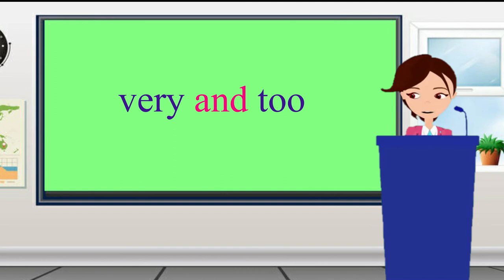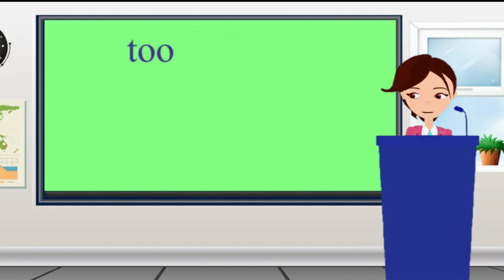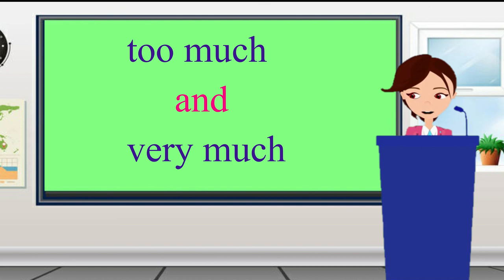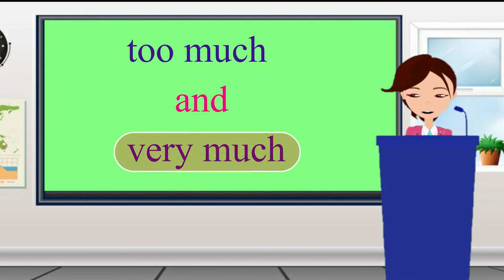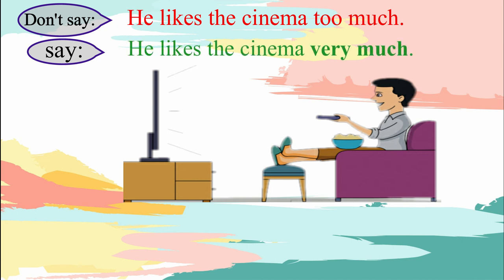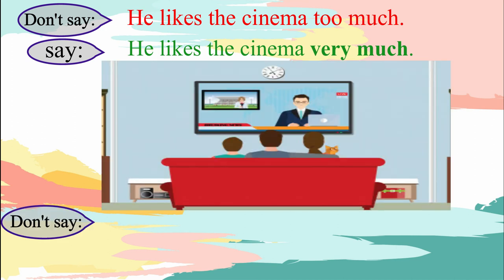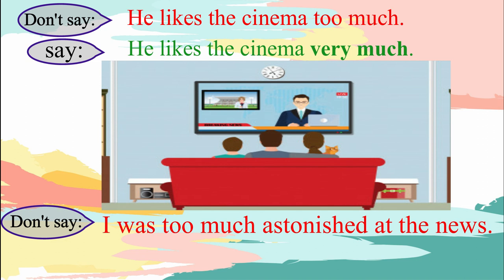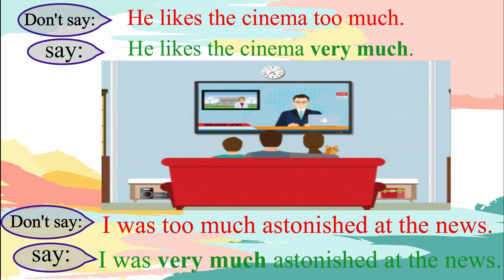In the previous slide we learnt about the usage of adverbs very and too. Now let us understand the difference between too much and very much. Too much denotes an excessive quantity or degree. Very much is used instead of much for greater emphasis. For example, don't say: he likes the cinema too much. Say: he likes the cinema very much. Similarly, don't say: I was too much astonished at the news. Say: I was very much astonished at the news.